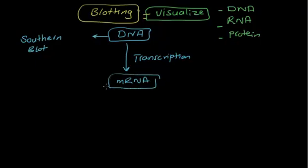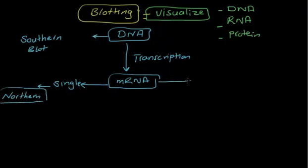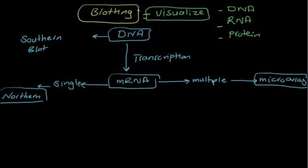There are two types at the mRNA level. If you want to see a single mRNA, you go with Northern blot. If you want to see multiple mRNAs, you go with the microarray technique. So far you have three methods: Southern blot at the DNA level, Northern blot for single mRNA, and microarray for multiple mRNAs. After that comes translation, and after translation you get protein.